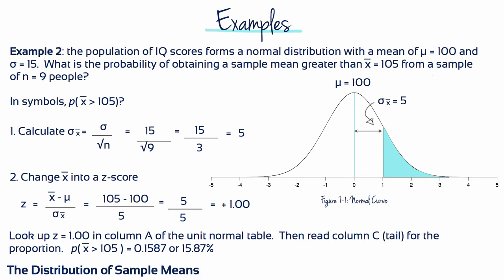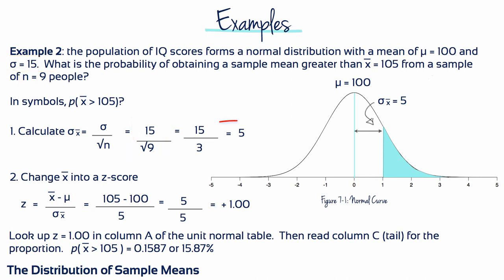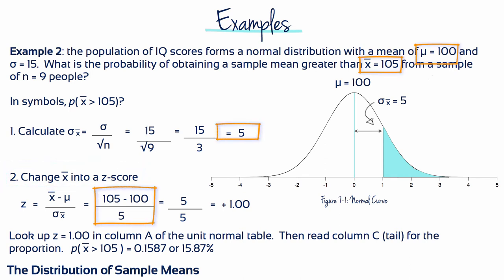Example 2: A population of IQ scores forms a normal distribution with a mean of 100 and a standard deviation of 15. What's the probability of obtaining a sample mean greater than 105 from a sample of n equals 9 people? We calculate the standard error first: 15 divided by the square root of 9 equals 5. We then change the sample mean into a z-score: 105 minus 100 divided by the standard error equals 5 divided by 5, which is a z-score of 1. Looking up 1 in the unit normal table gives us a probability of 0.1587, or 15.87% — that's the probability of choosing a sample of 9 people who have a mean IQ greater than 105.